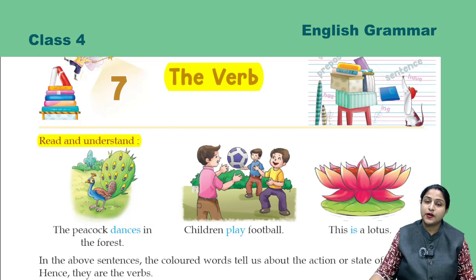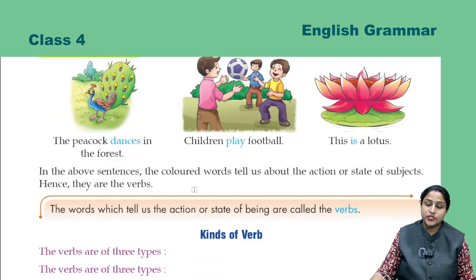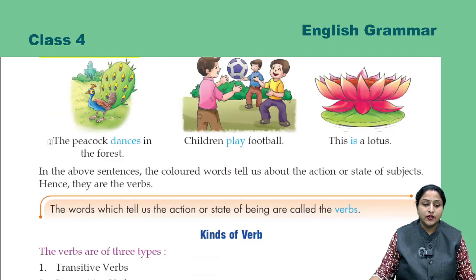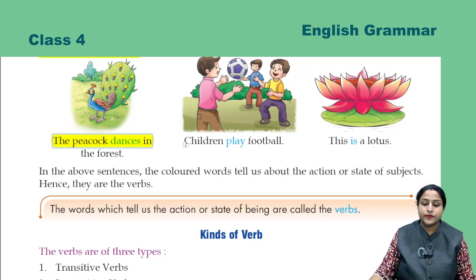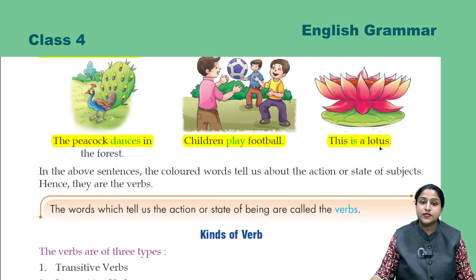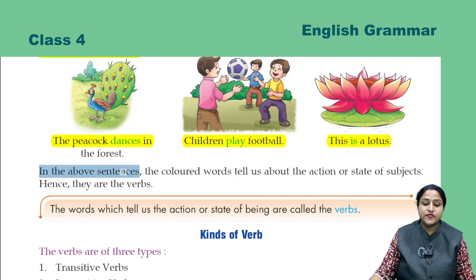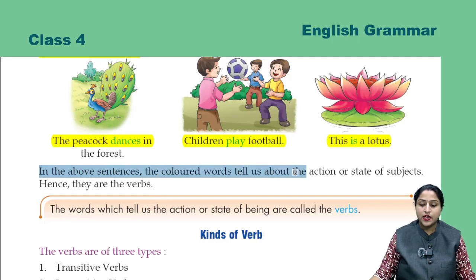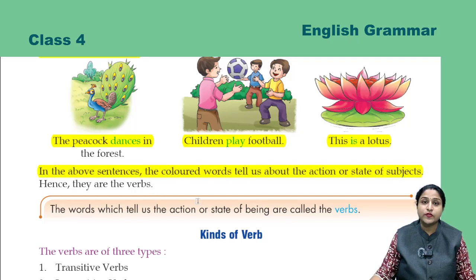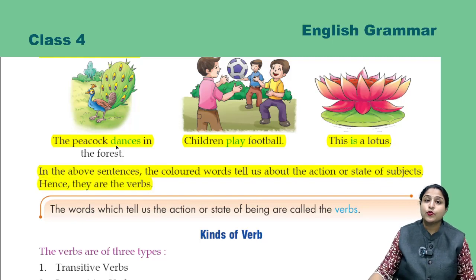Read and understand. The peacock dances in the forest. Children play football. This is a lotus. In the above sentences, the colored words tell us about the action or state of the subject. Hence, they are the verbs.